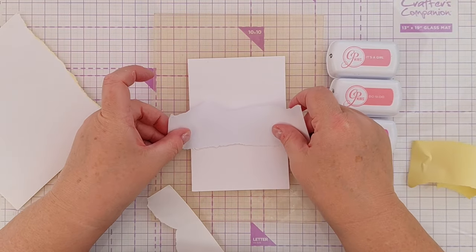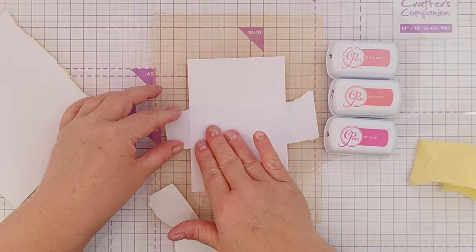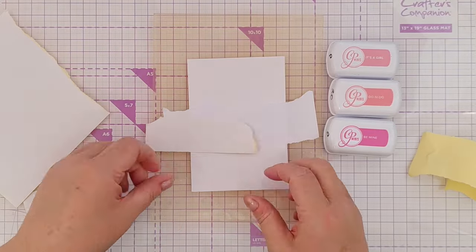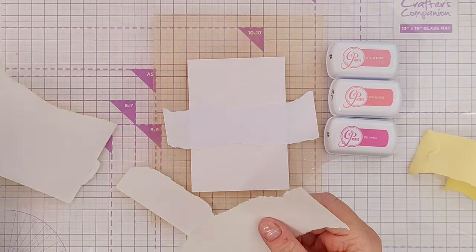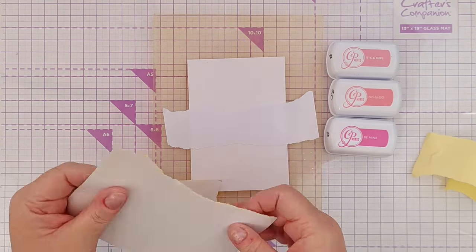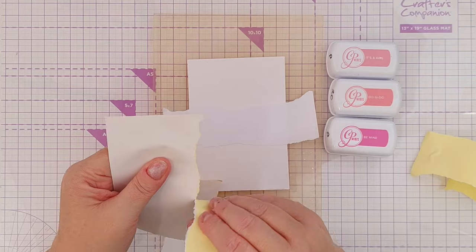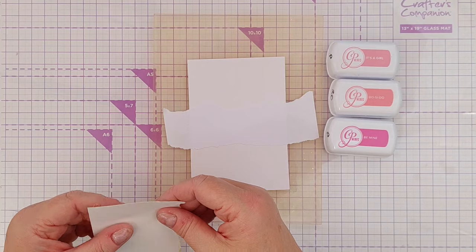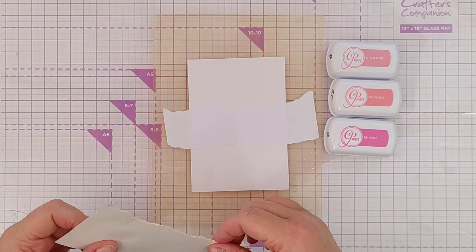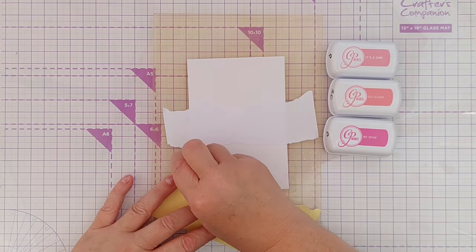It's so low tack that it won't tear your paper, but it's also thick enough so that inks and things don't seep through to the masked area underneath.